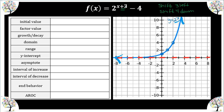The h value — the value added or subtracted from x — tells us to go left or right. If it's adding, we go left. The k value — the value added or subtracted from your exponential term — tells us to shift up or down, and you shift as you see it. This is minus four so we're going down four. My y-intercept shifts left 1-2-3 and down 1-2-3-4. My ordered pair (1, 2) goes left three and down four. Our asymptote of y = 0 also shifts to the k value, minus four.